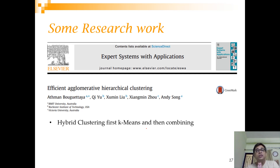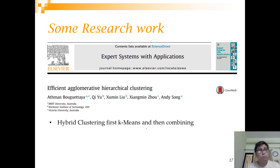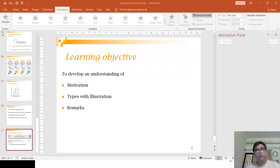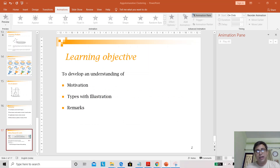In agglomerative clustering, we start with all points in different clusters and progressively merge them. The opposite is called divisive clustering, where you start with all points in one big cluster and go by splitting them. Thanks for watching — please put your questions in the comments, like the video, and subscribe to the channel.